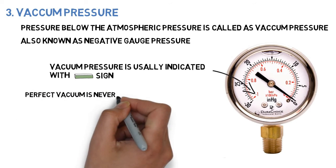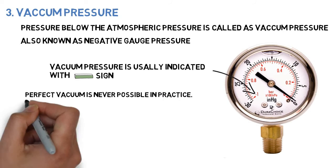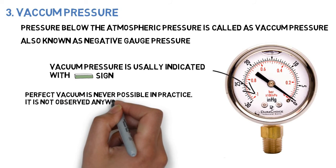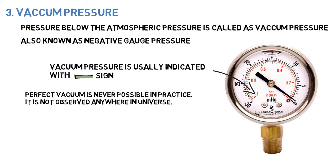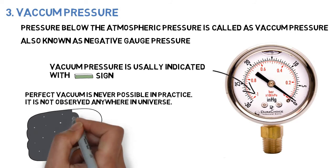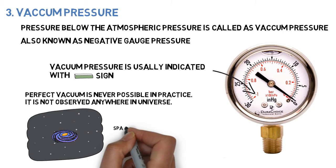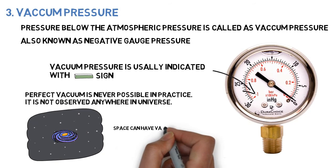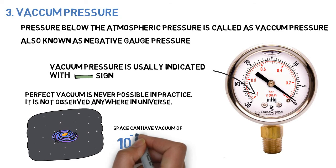Perfect vacuum is never possible in practice. It is not observed anywhere in the universe. Even space will have a very low pressure, which means not completely vacuum.